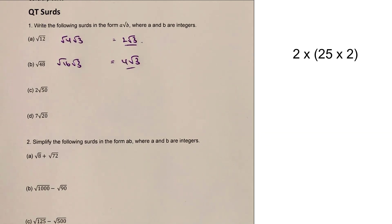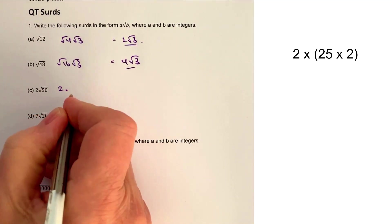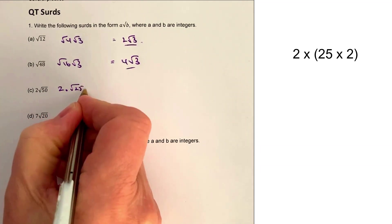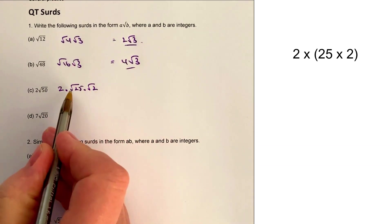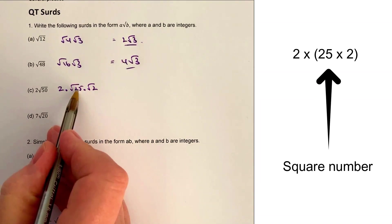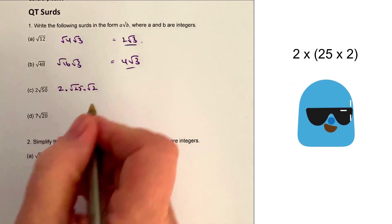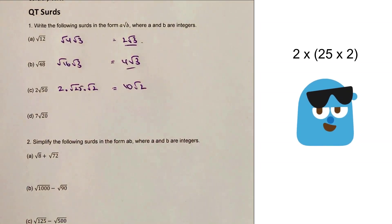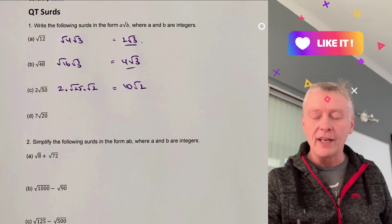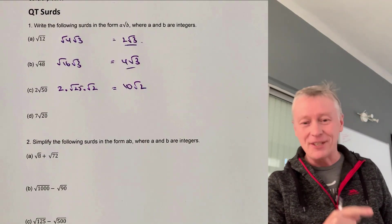With the third question we've got 2 times root 50. That's the same as saying 2 times the square root of 25 times the square root of 2, since root 25 times root 2 equals root 50. The square root of 25 is 5, so it's 5 times 2, which is 10. So that's going to work out as 10 root 2. All we're doing is just ignoring the 2 at the beginning until we need to multiply it out.